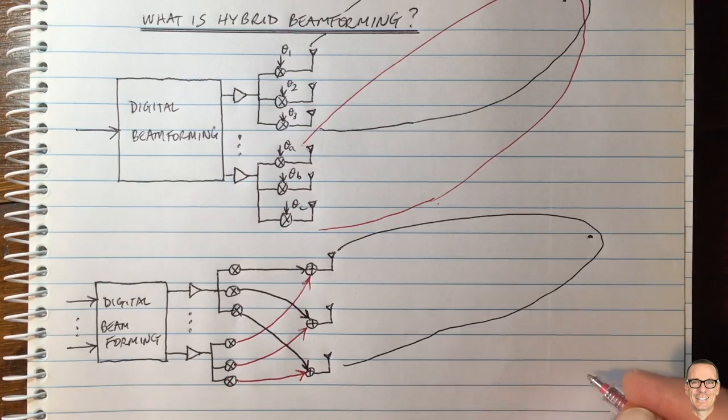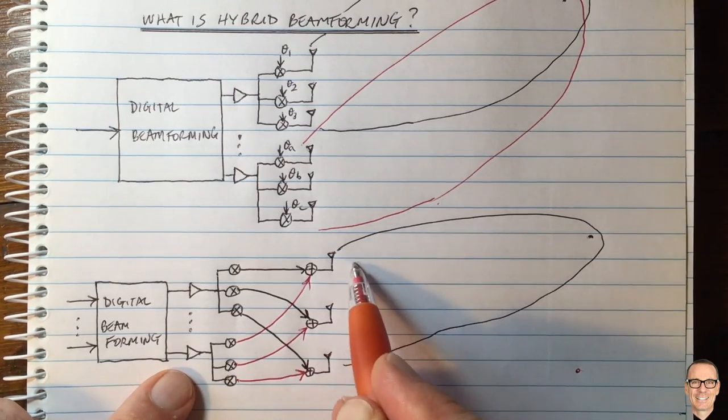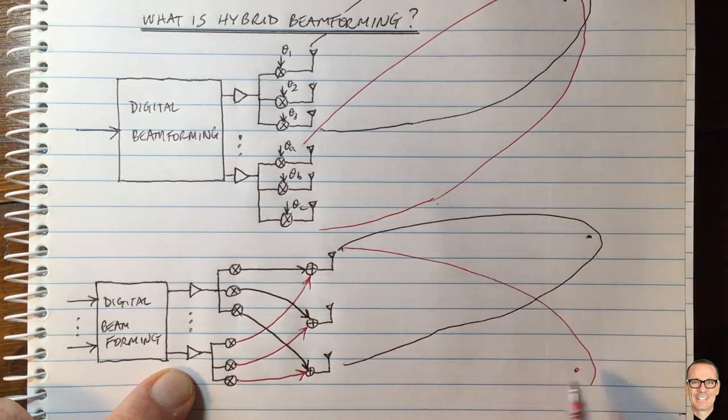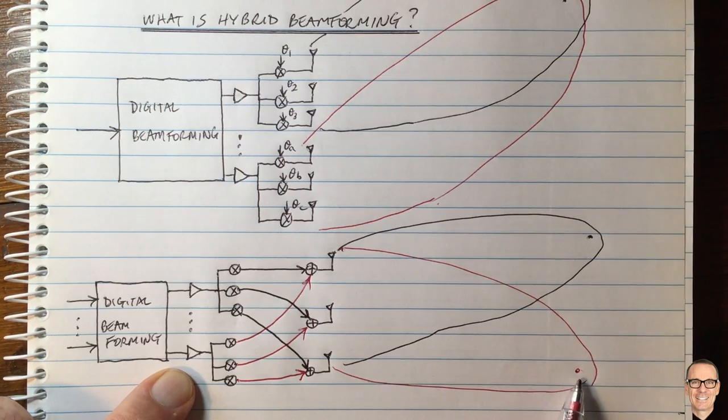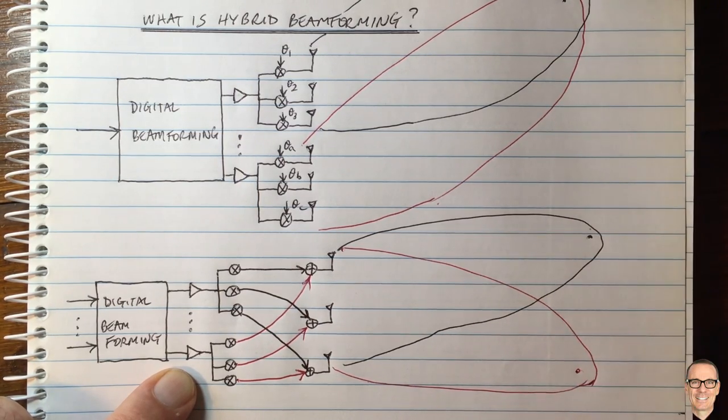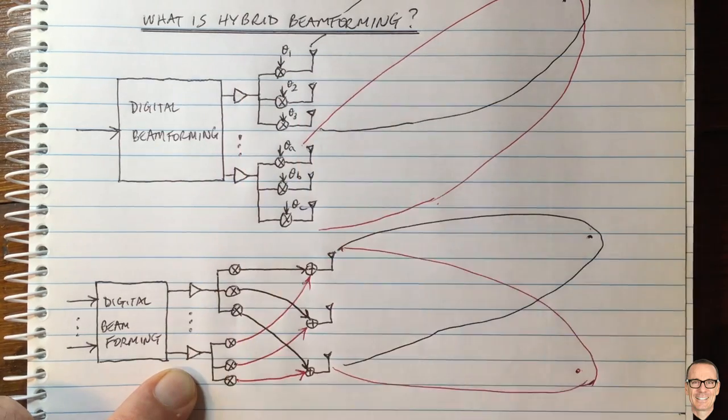And then there might be another user over here and we could for the red stream be beamforming across all of those antennas to that user over here. And so now we can have multi-user structures in the hybrid beamformer.